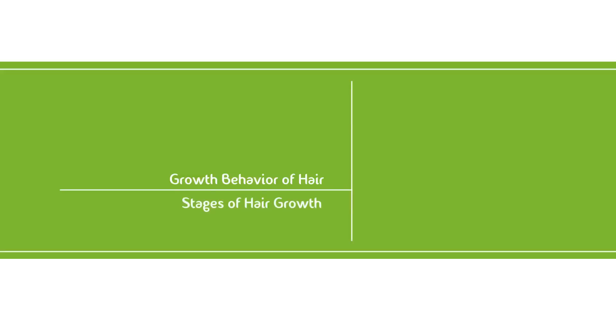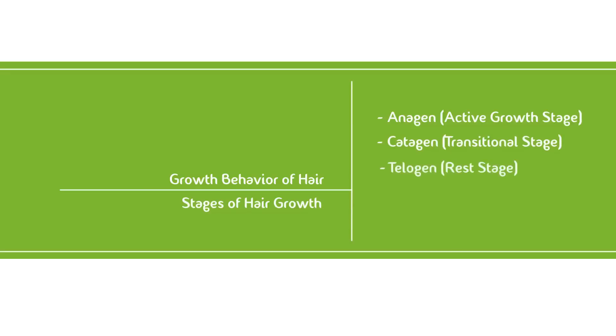Let's pick up right where we left off from last week and go into the four growth stages. The three most commonly known stages of hair growth are the anagen, or active growth stage; the catagen, or transitional retreat stage; the telogen, or rest stage; and the exogen, or shedding stage.